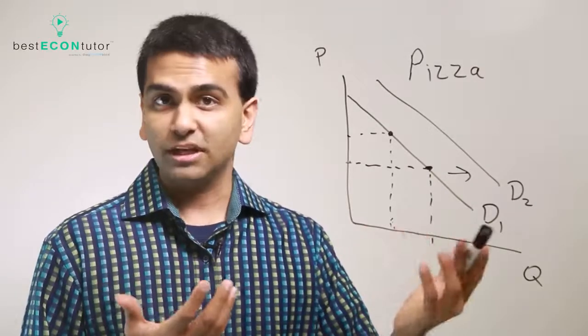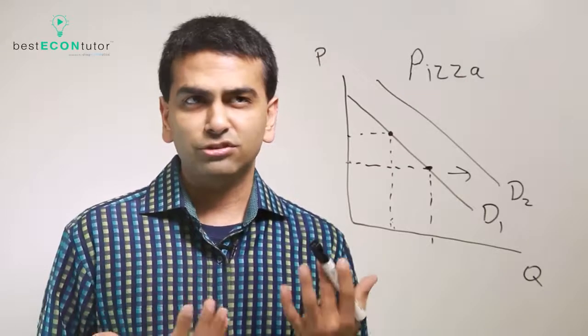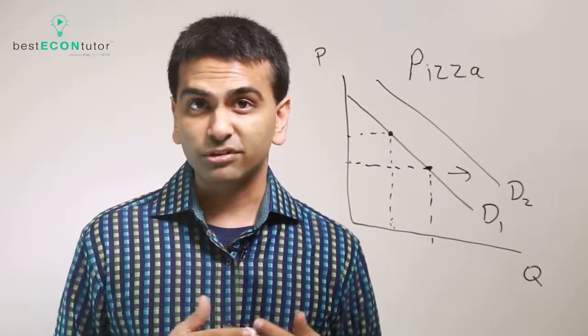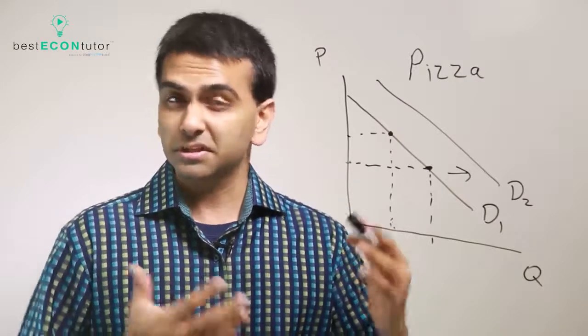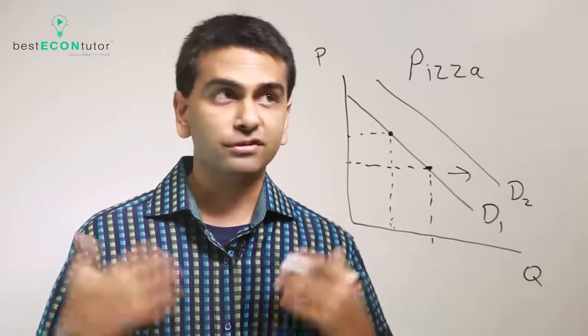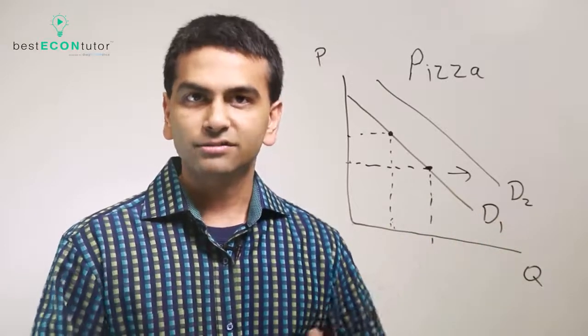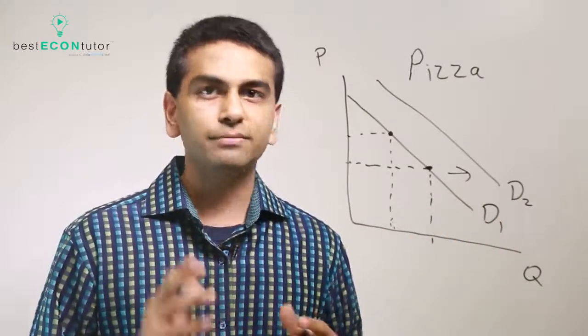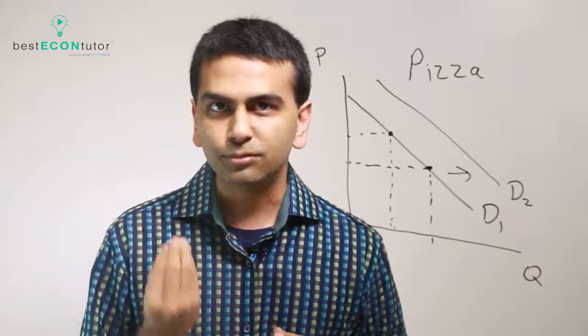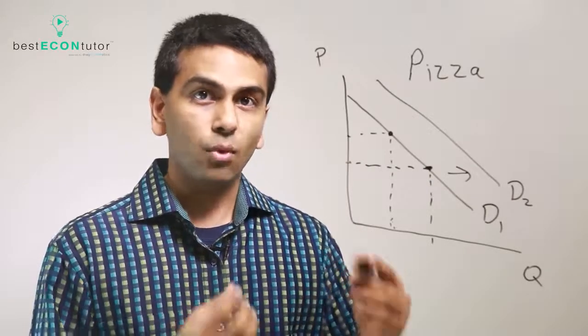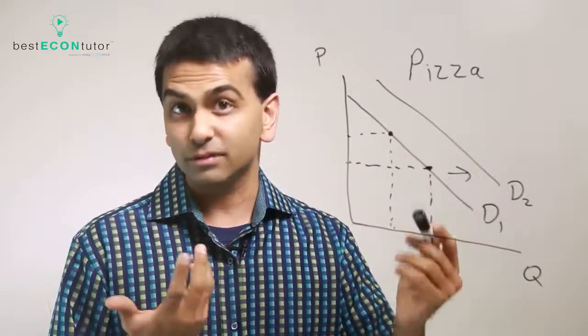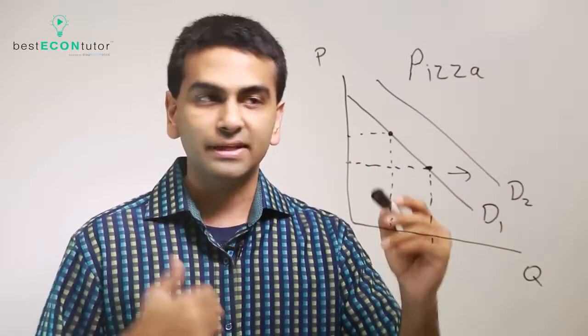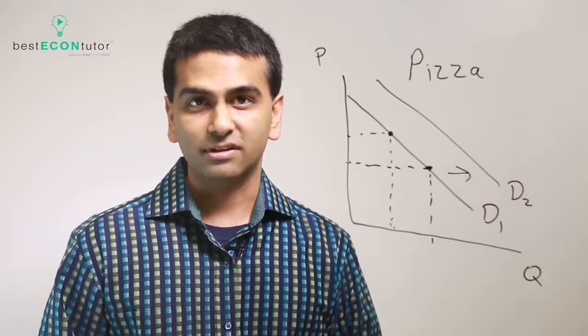Other things that could change the demand curve are really just changes in preferences, which could happen. Celebrity endorsements. If a celebrity endorses a good, then that'll make people want it more. If there's more consumers in a town, then the market demand is more. So that shifts to the right. So rather than trying to memorize a list, which you can kind of, but it's really better to have a conceptual understanding. What will make me want more of this good, even if its price didn't change, right? Because a price change is just moving along it. So if something makes you want more of it, even at the same price, that's what's going to cause the shift.